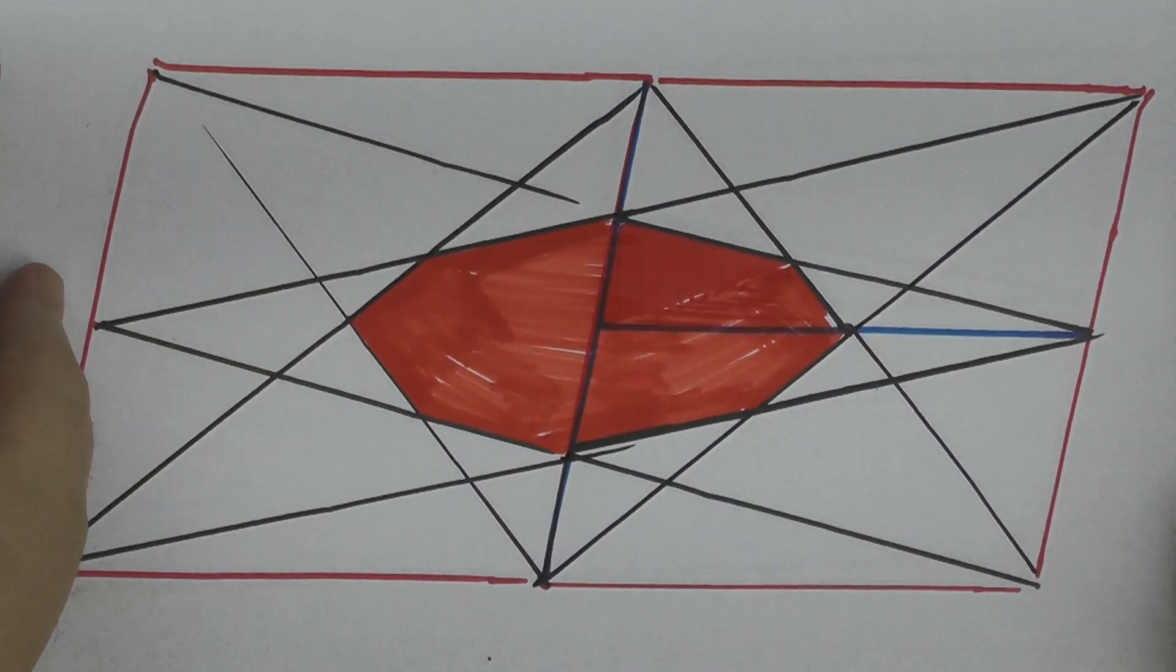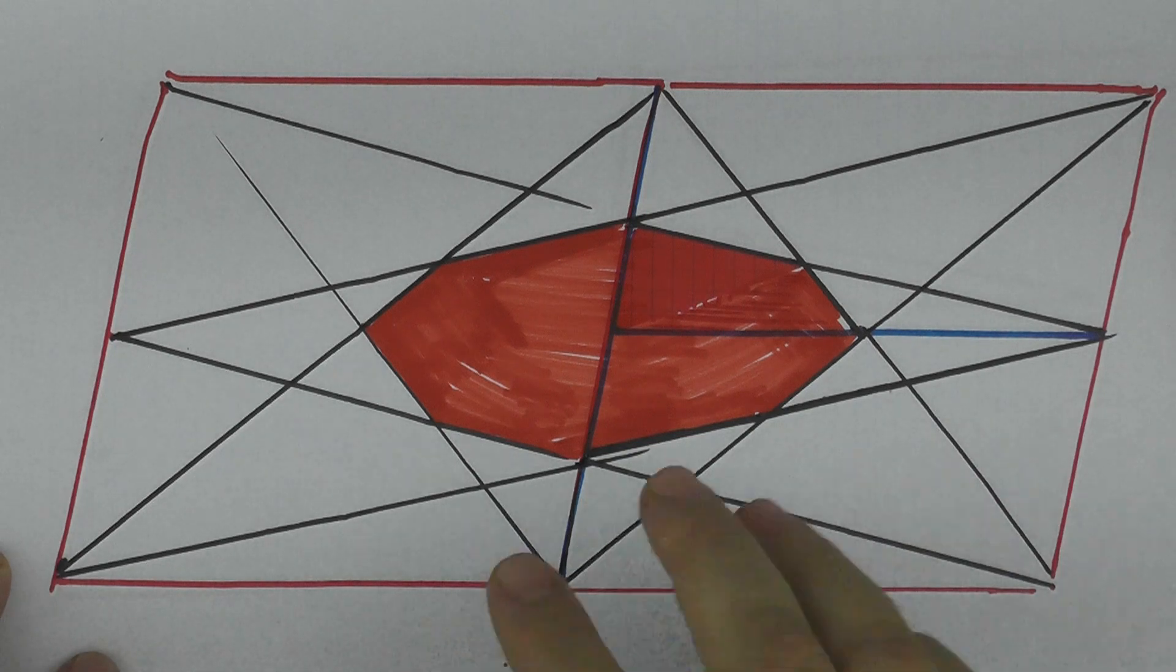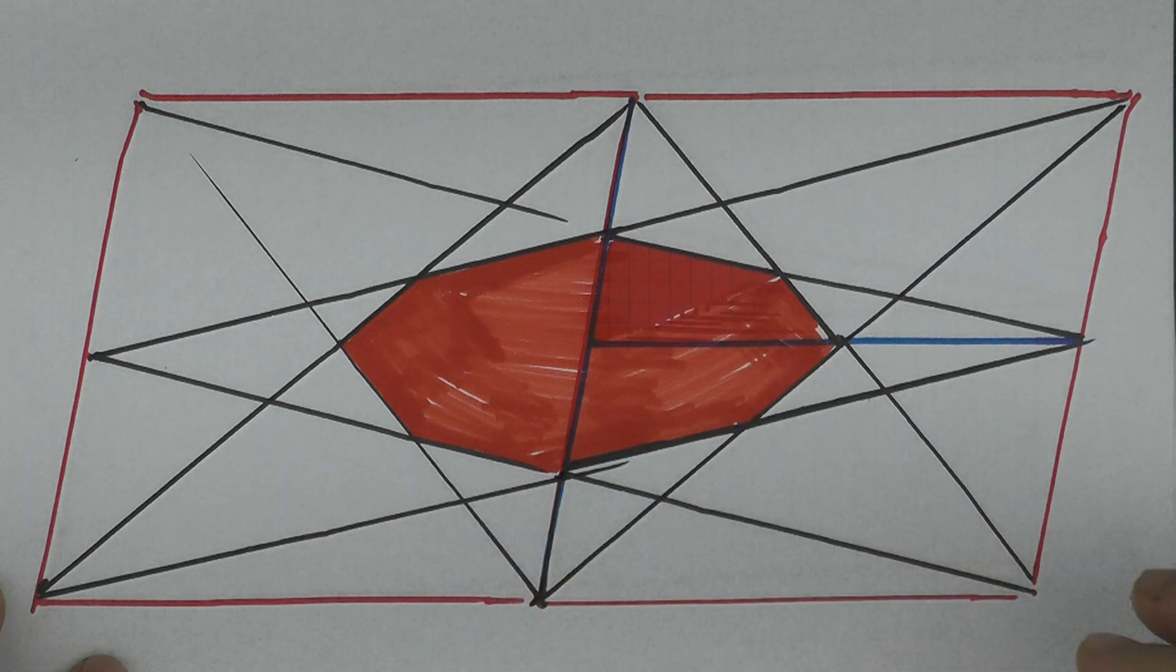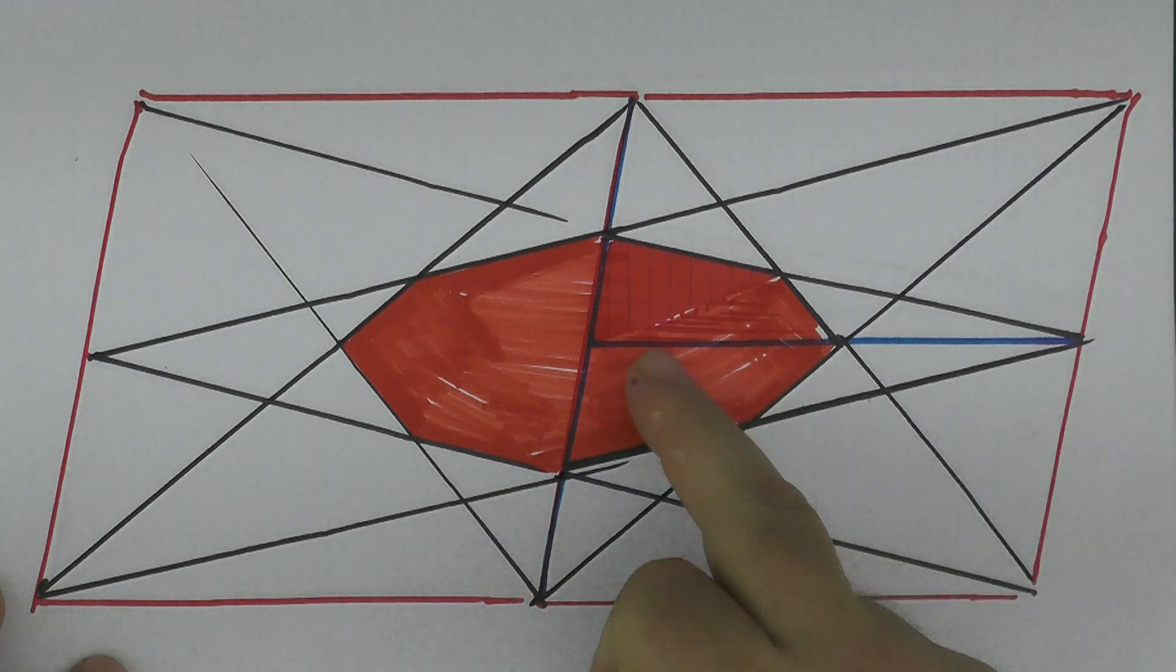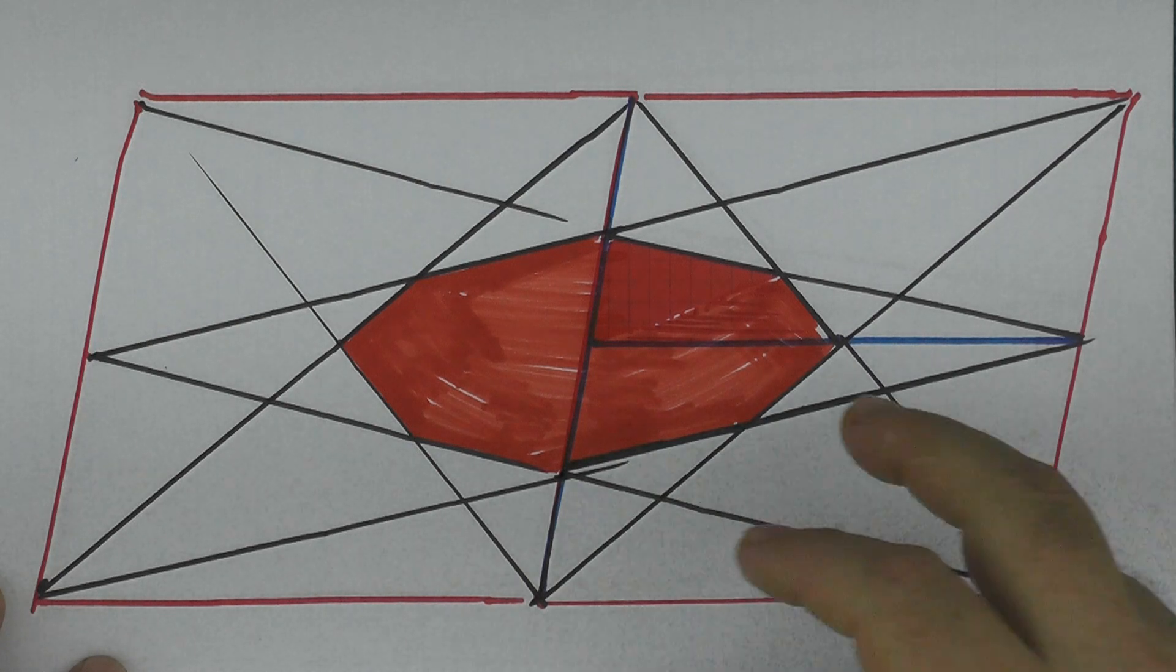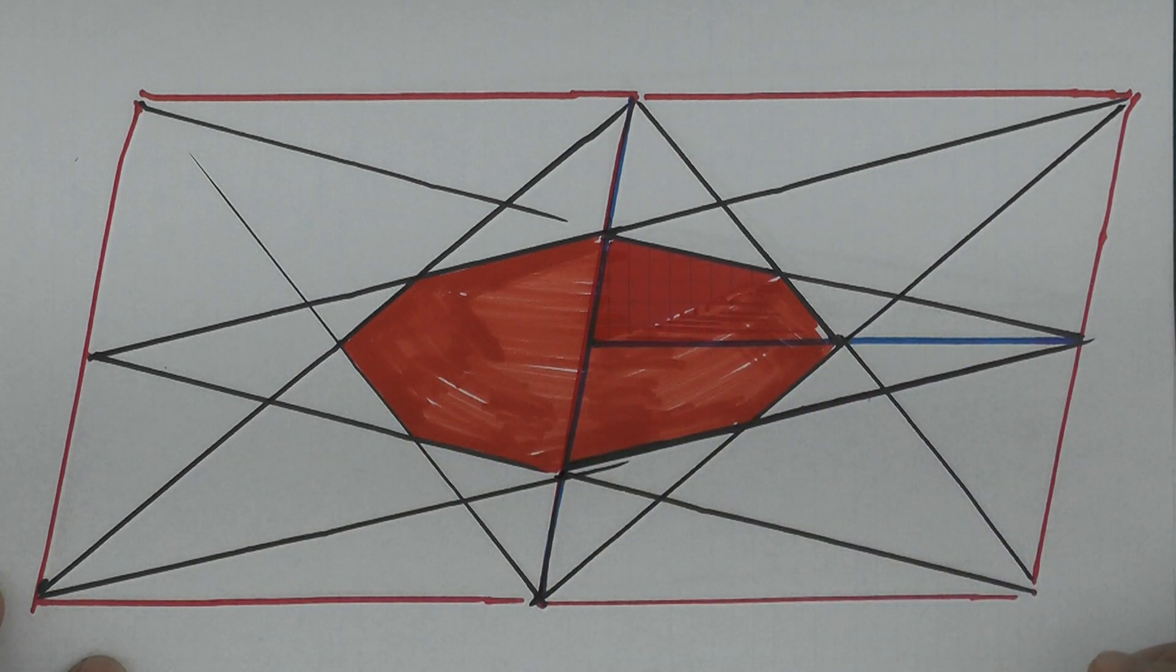So here is the problem again, and we have here the octagon, and we would like to show that this octagon is 1 over 6 ratio of the area of the parallelogram.